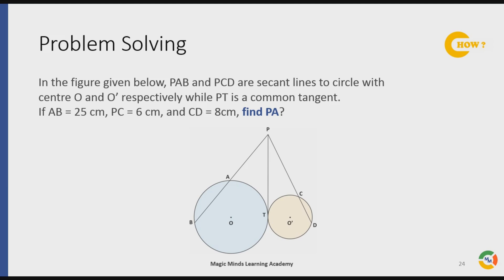If AB = 25 cm, PC = 6 cm, and CD = 8 cm, find PA. Go ahead and solve the problem.